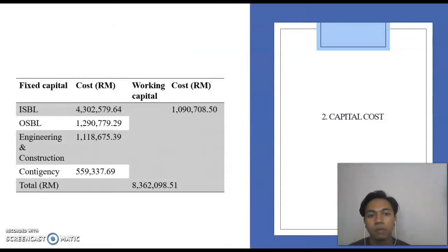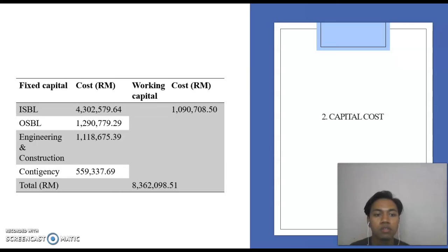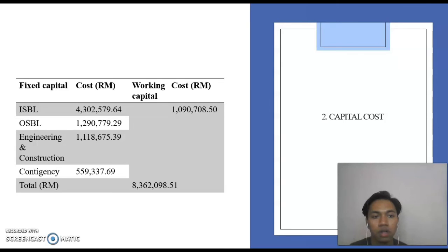For capital cost, there are 2 parts: fixed capital and working capital. Fixed capital consists of ISBL, OSBL, engineering and construction, and contingency. The total for fixed and working capital is RM8,362,098.